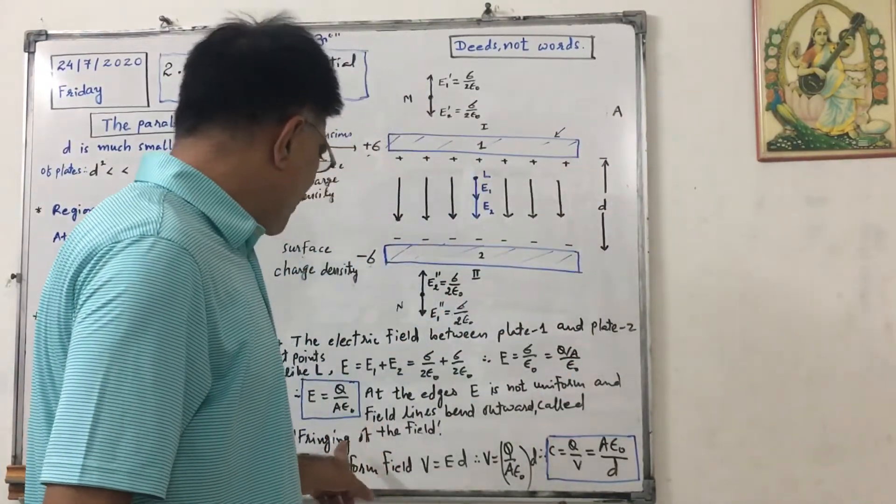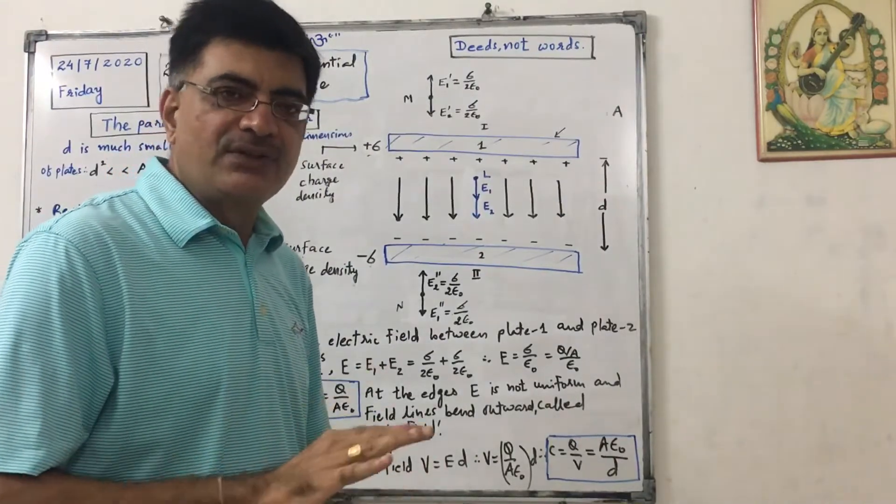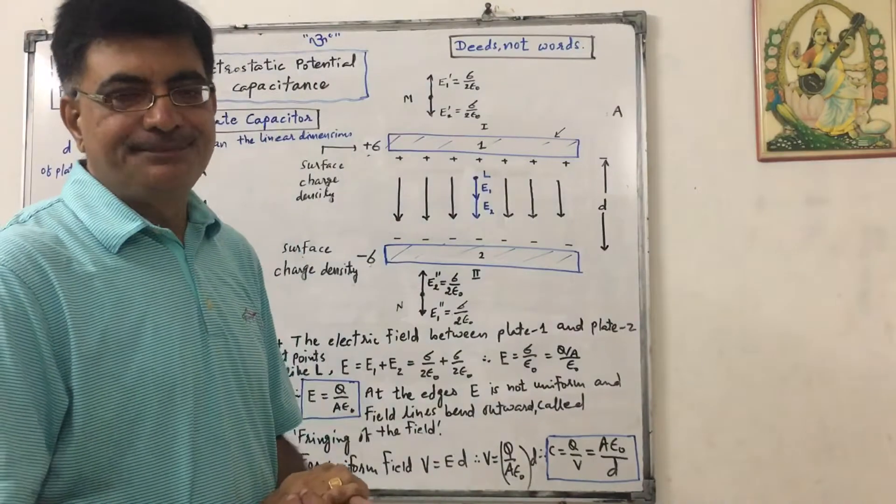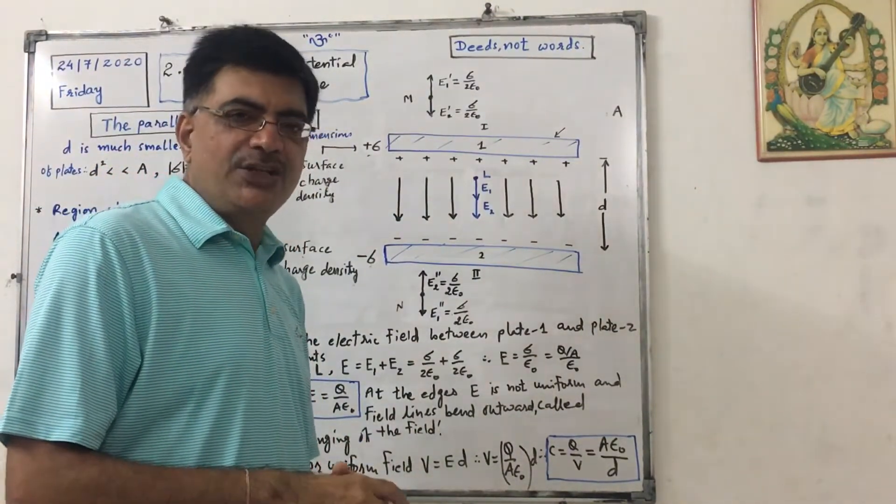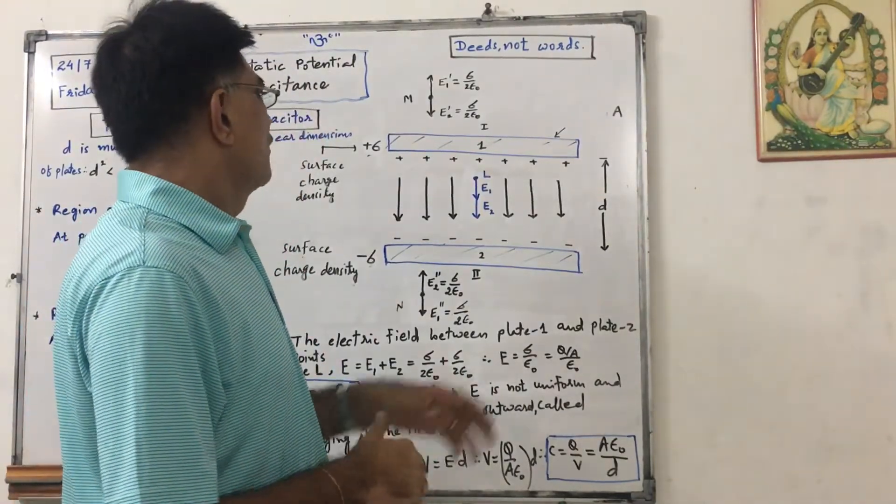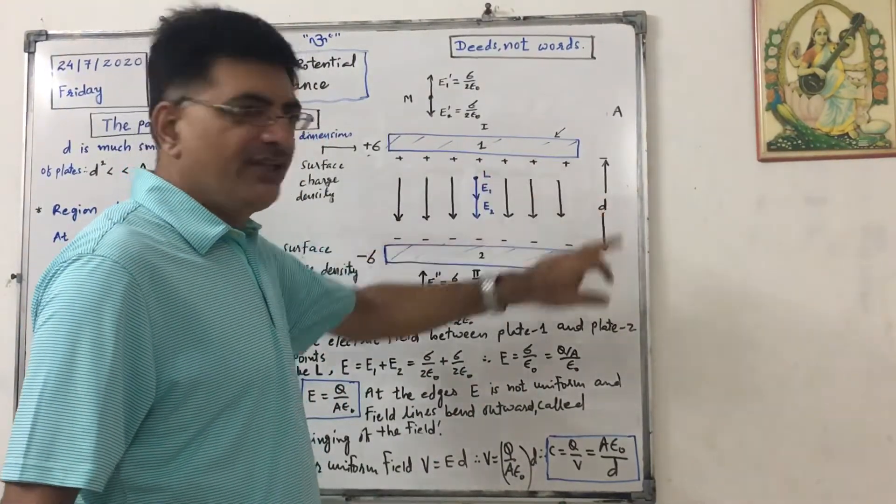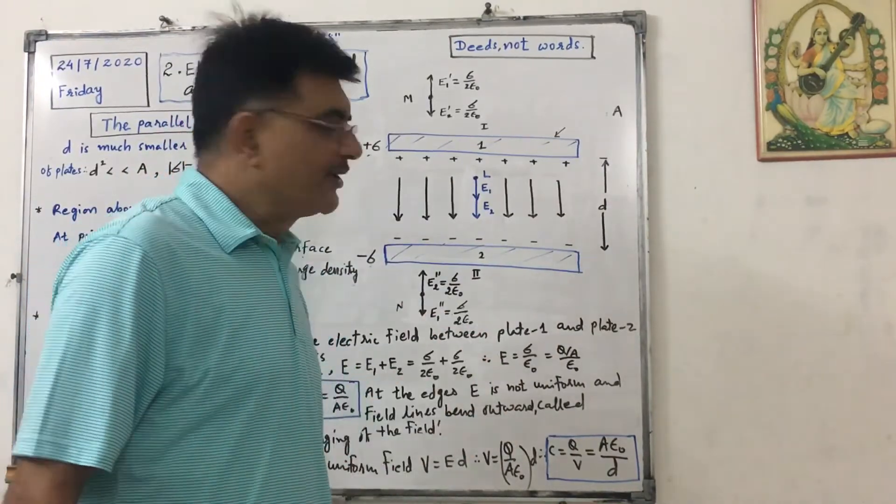That is called fringing of field, but here we have considered vacuum so we can consider it as uniform electric field. Fringing of field I will explain you in some lecture of NEET. The distance between two plates is small d which is very small compared to area of the plate.